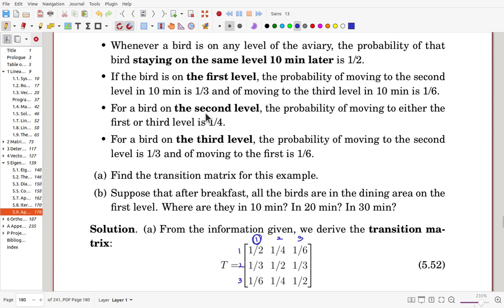Now, for the second level, the probability of moving to either the first and third is one fourth. So that, and from the first statement, here, the staying half, and now in 10 minutes later, in quarter probability are given. So we put here quarter and quarter.